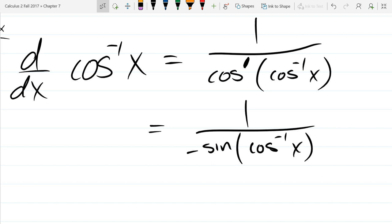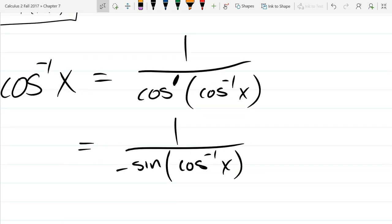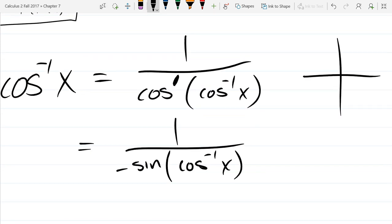Now, way back in pre-calculus 2, we graphed out the cosine function. It was like that. I mean, it kept going forever both ways. But we cut off. We restricted the domain. So we got rid of basically all this stuff right here.